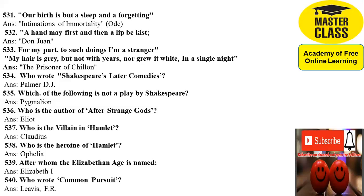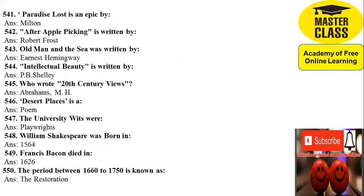539: After whom is the Elizabethan age named? Answer is Elizabeth I. 540: Who wrote 'Comus'? Answer is John Milton. 541: Paradise Lost is an epic by Milton. 542: 'After Apple-Picking' is written by Robert Frost. 543: The Old Man and the Sea was written by Ernest Hemingway. 544: 'Hymn to Intellectual Beauty' is written by P.B. Shelley.